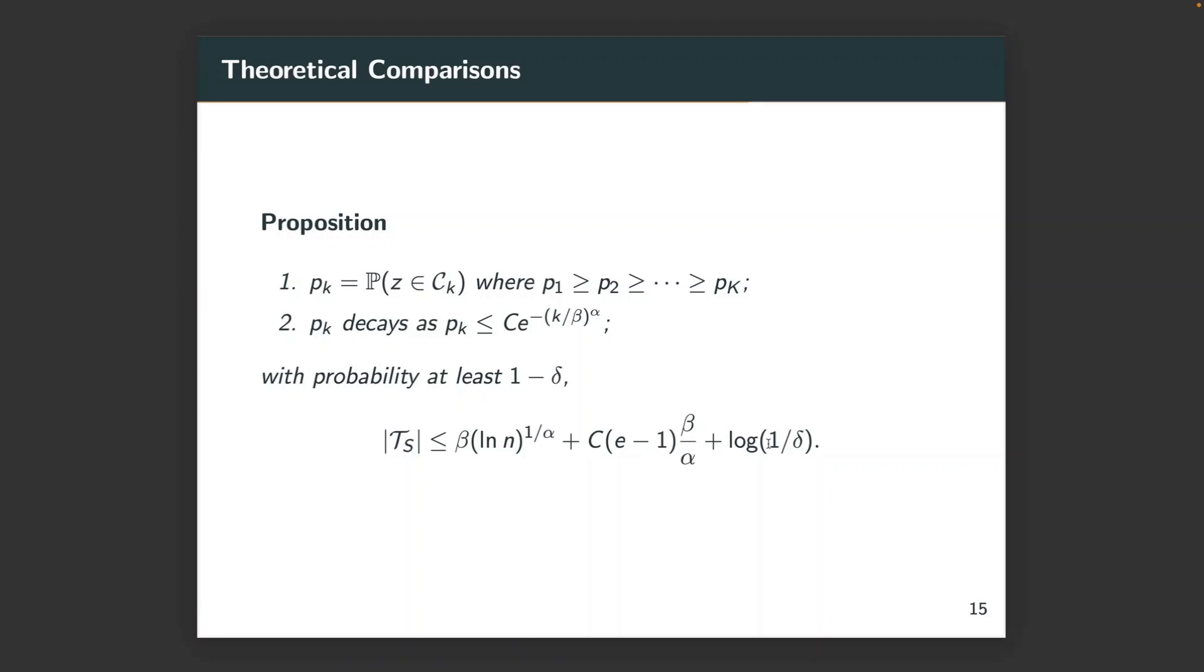Now we can also show the advantage of our bounds by some theoretical examples. Here, first we provide a proposition. Basically, it is saying that if we rank the probability of p_k in a decreasing order, if it decreases fast enough, then actually the cardinality of |T_s| is in the order of log n, where n is the number of training data.